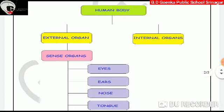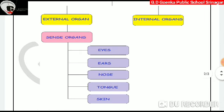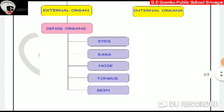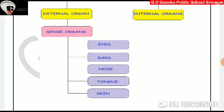Dear students, as I told you, external organs help us to perceive our surroundings, so we also call them sense organs. Our body has five types of sense organs: eyes, ears, nose, tongue, and skin. All these senses send messages to the brain through thin thread-like structures which we call nerves. The brain analyzes these messages and tells the part of the body to act accordingly.